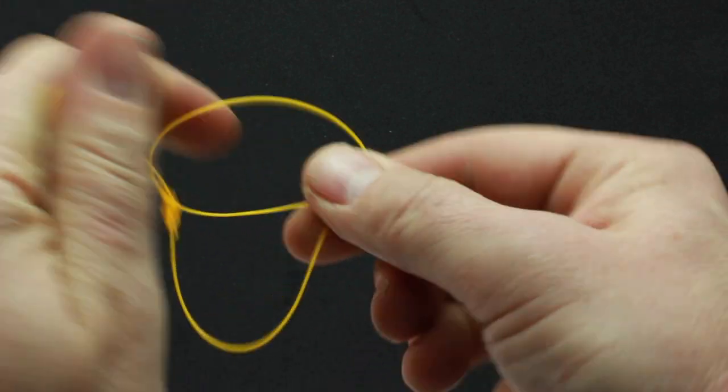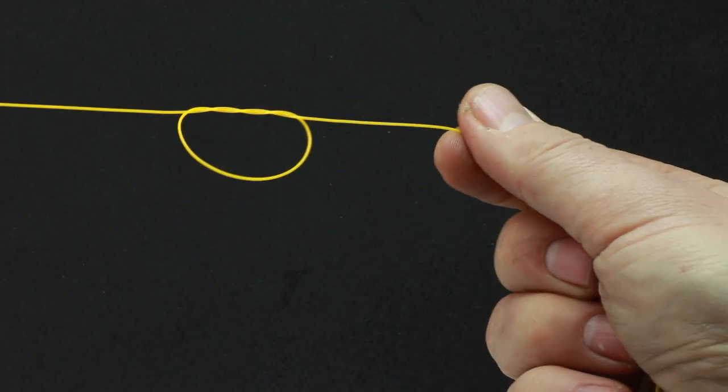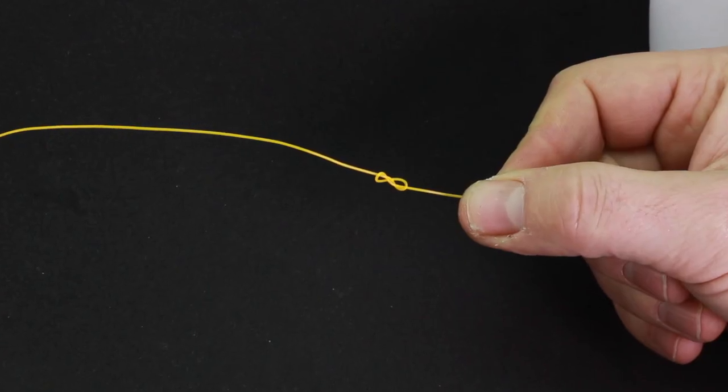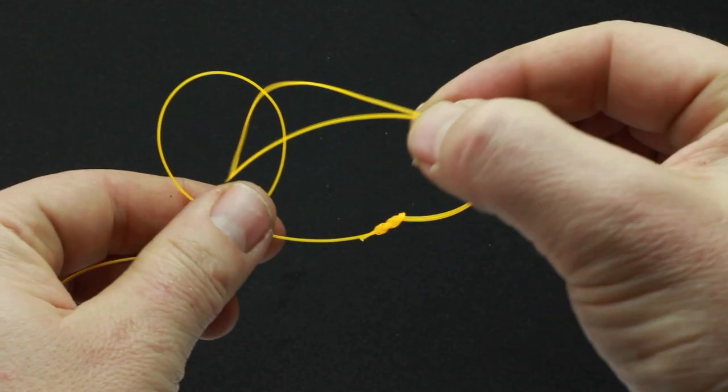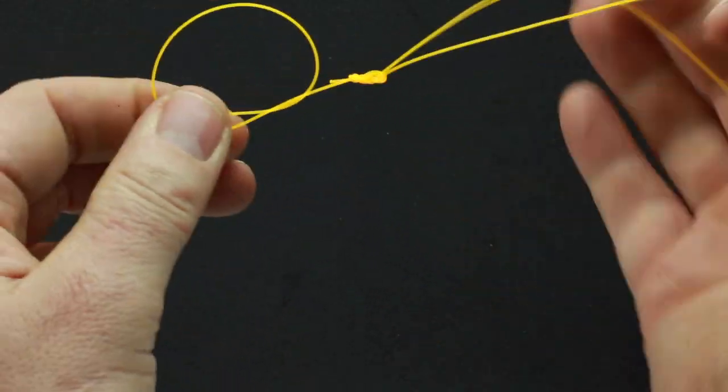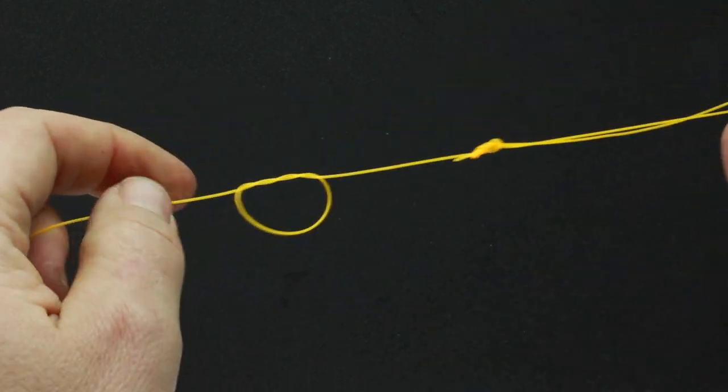Now we're going to tie on four droppers. You just need to do two overhand knots, and they should when it bites down give you two little openings like that. Do one on the top of the rig and one on the bottom, just a few inches in.